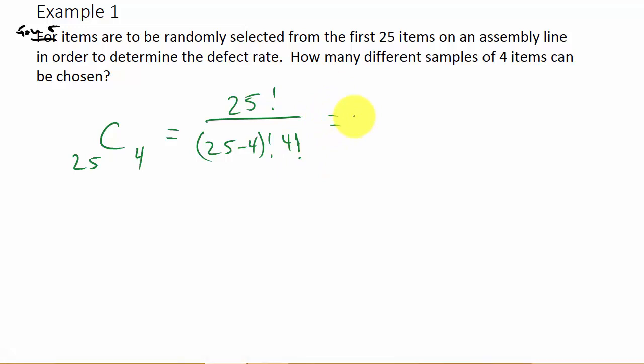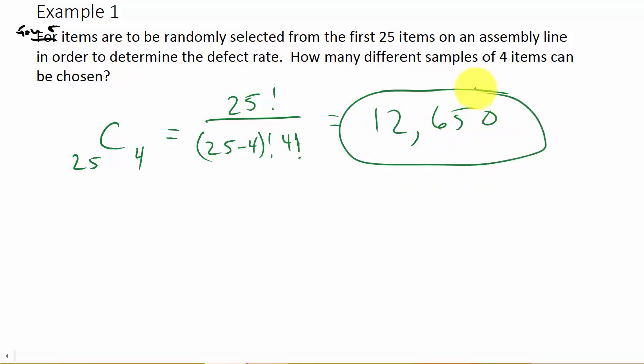So I'm going to plug this into my calculator. I've got a TI-30X2S. The way you do it: type in 25, hit the PRB button, and you'll see on the screen NPR, NCR, and the factorial symbol. Go over to where that line is under NCR and hit enter, then it takes you back to the main screen. Type in 4 and hit enter, and you get 12,650 different ways that you can do that.